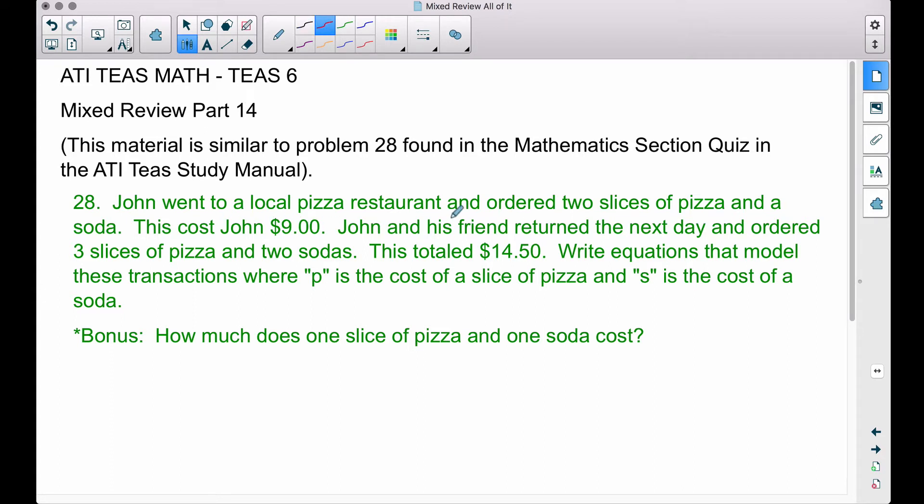Now we'll come back and talk about this bonus question in a second, but let's write some equations that model this. On that first trip, John ordered two slices of pizza and a soda. If P is the cost of a slice of pizza, two times P will be the cost of two slices. John also got a soda, so we can say plus one S. If you add this up, the cost of two slices of pizza plus one soda cost John nine dollars. There's our equation that models this first sentence.